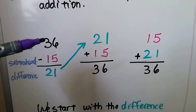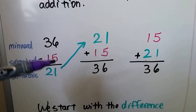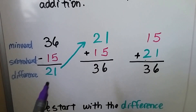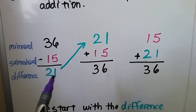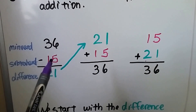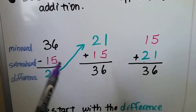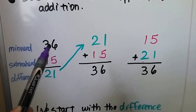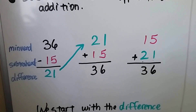We can have 36 and take away 15. 6 minus 5 is 1, and 3 minus 1 is 2. Our difference is 21. If we add this 21 and this 15 — the difference and the subtrahend — and it equals our minuend, then we know we did it correctly.